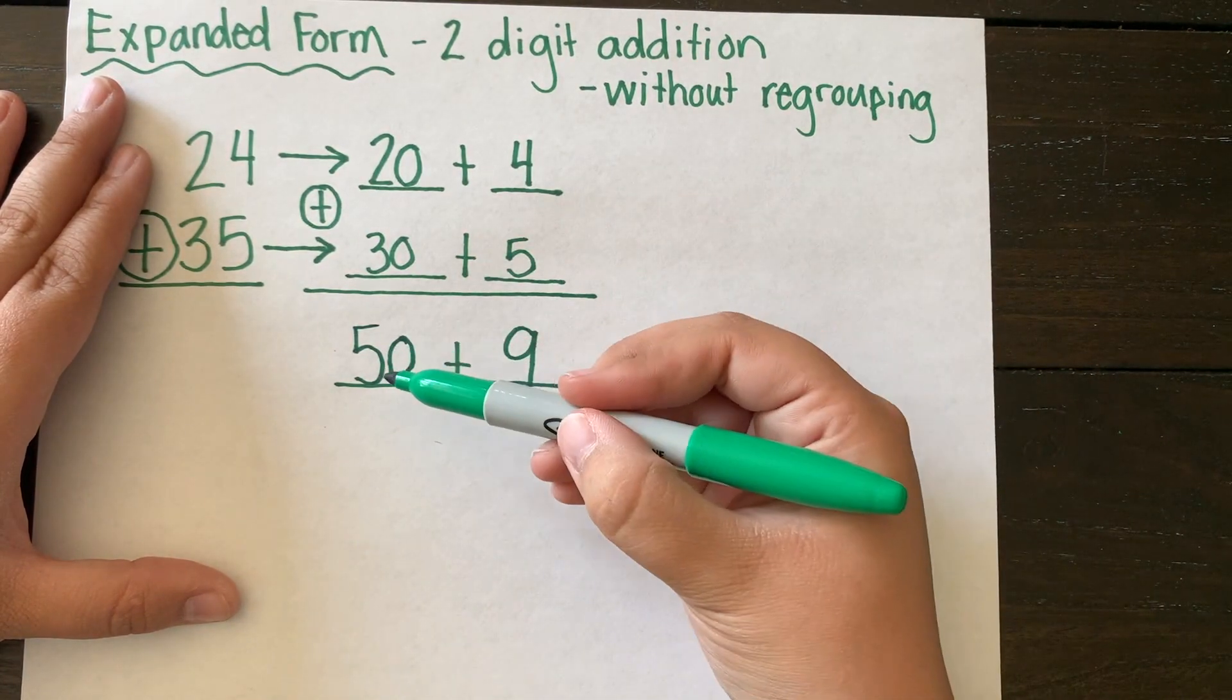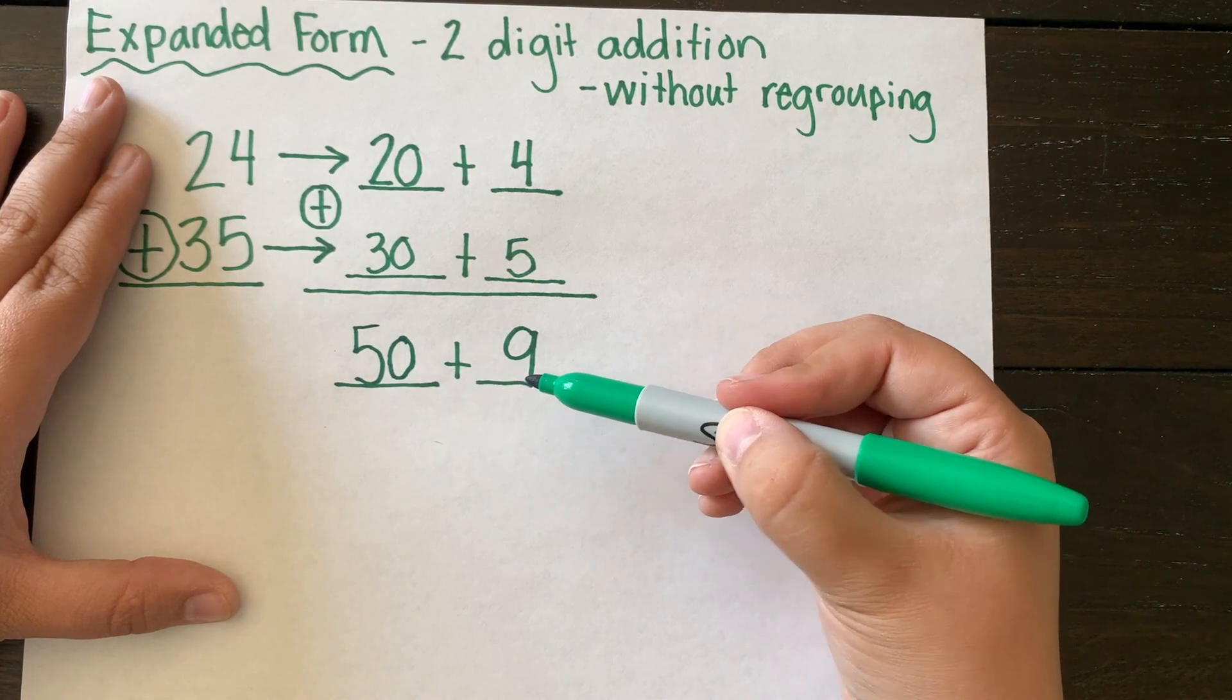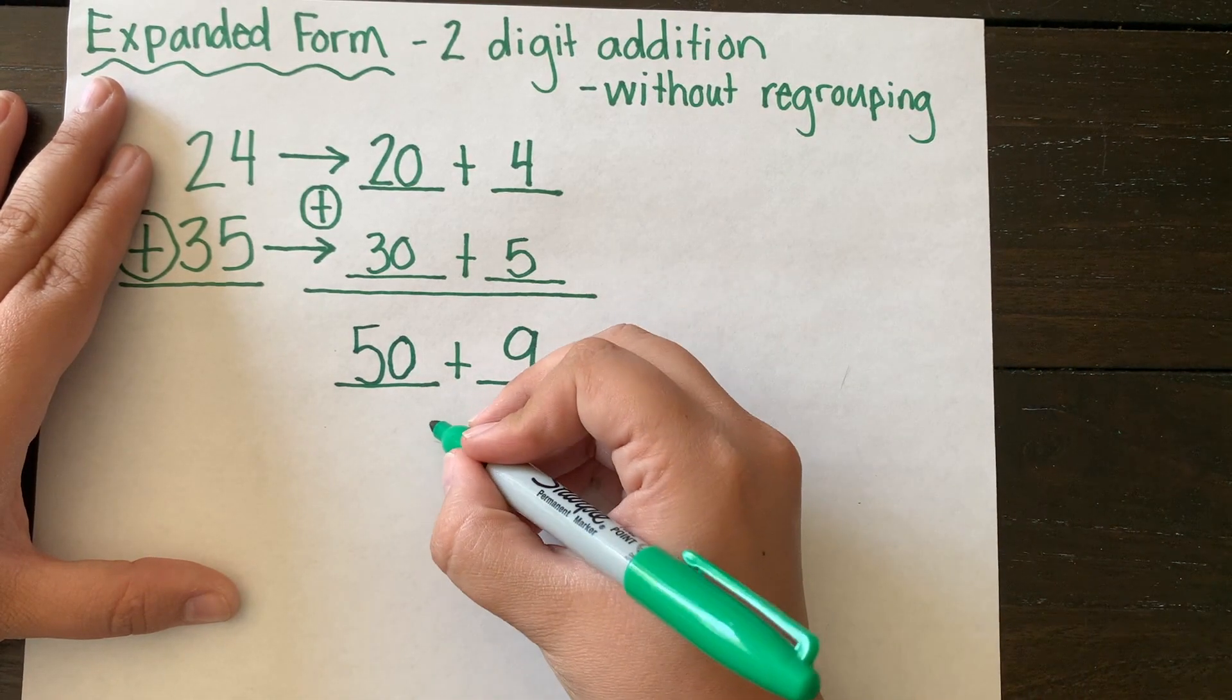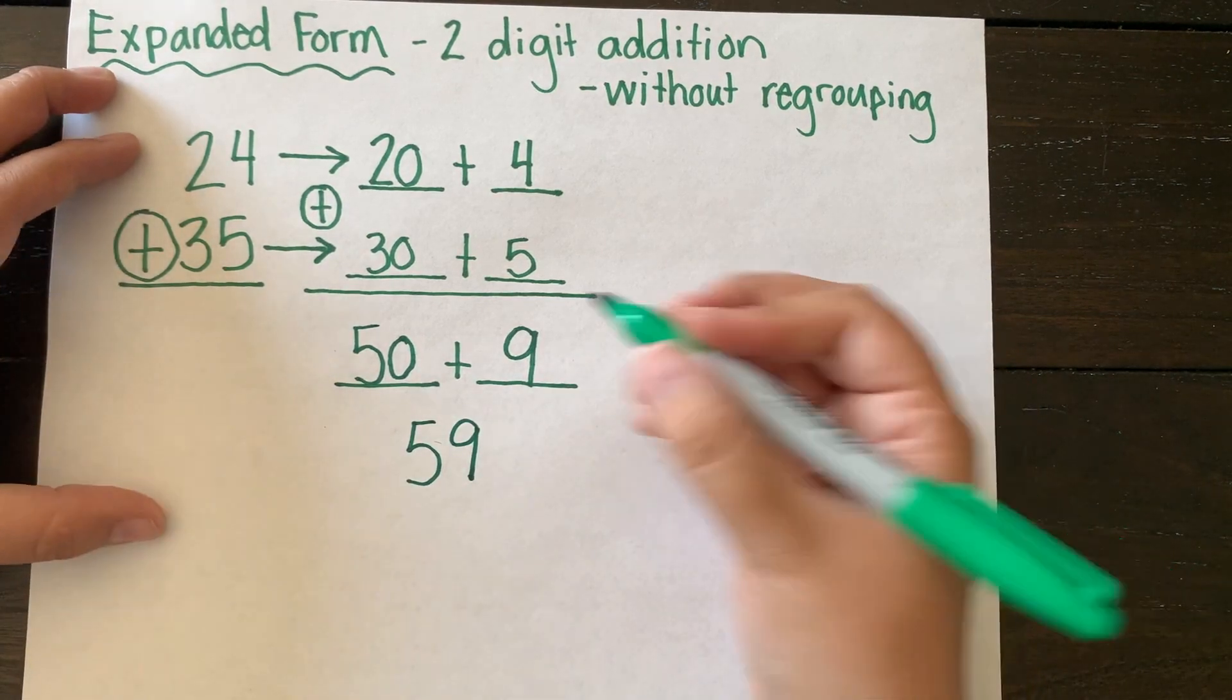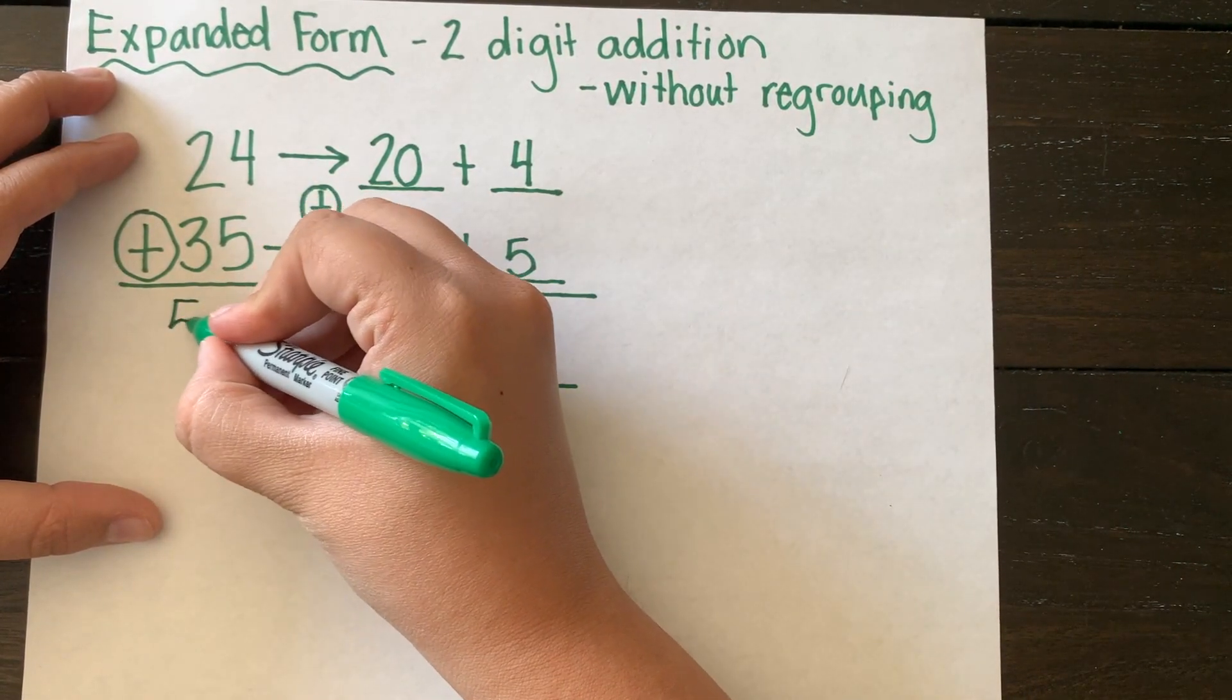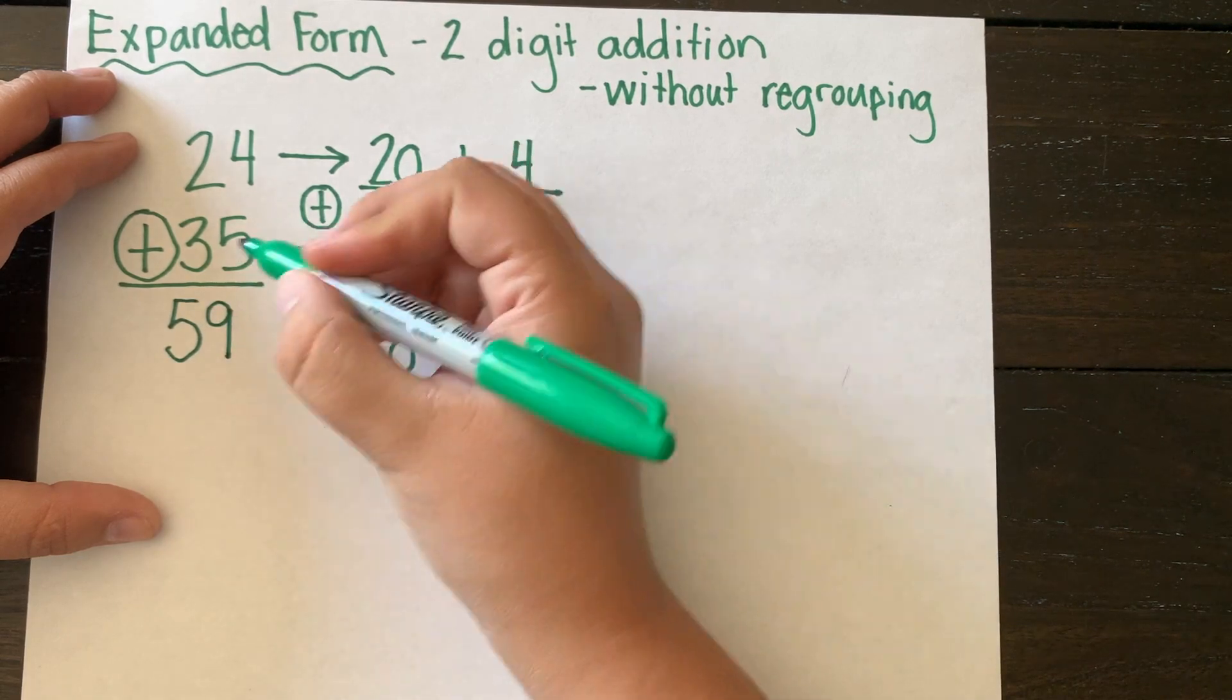Then I'm going to add it again together. 50 plus 9 equals 59. I'm going to write my answer here underneath the equal sign.